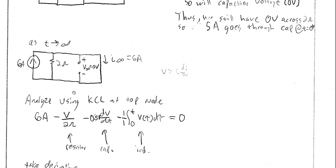At steady state, as t goes to infinity, the capacitor again behaves like an open circuit and the inductor behaves like a short. With the six amp source and an open circuit, all current goes through the inductor, so I(∞) equals six amps. The steady state voltage V(∞) equals zero volts.